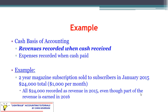Let's look at a revenue example under the cash basis. We have a two-year magazine subscription sold to subscribers in January 2015 for $24,000 total — that's $1,000 per month across 24 months. Under the cash basis, all $24,000 is recorded as revenue in 2015 because that's when we collected the cash, even though part of that revenue is really earned in 2016 as we continue sending magazines. In 2016, it would look like we did nothing.